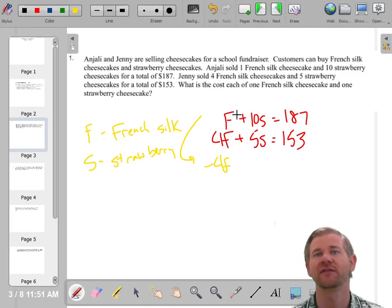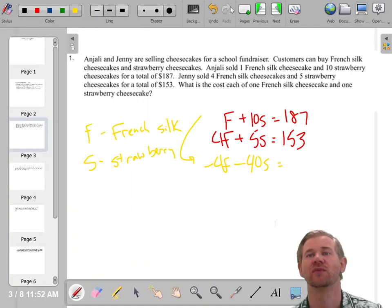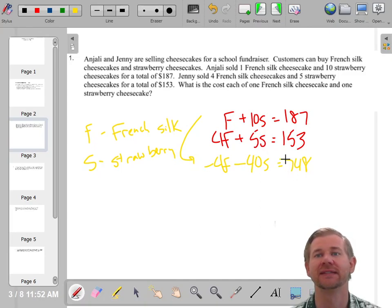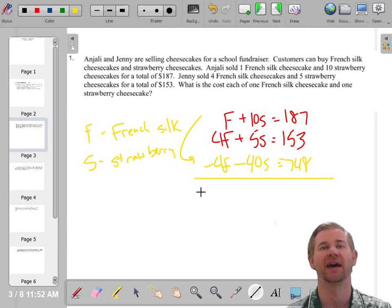So this will be negative 4F and 4 times 10 is 40, so negative 40S and 4 times 187. Let me get my calculator out. So 4 times 187 is 748. And I'm multiplying by negative four, so that's negative 748. I'm trying to get rid of F the way I'm doing it. I multiply this entire row by negative four to create this new equation.